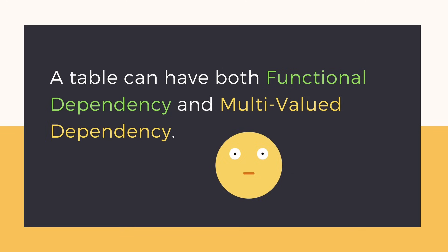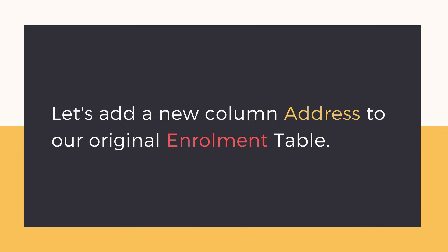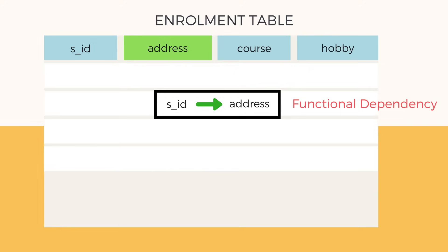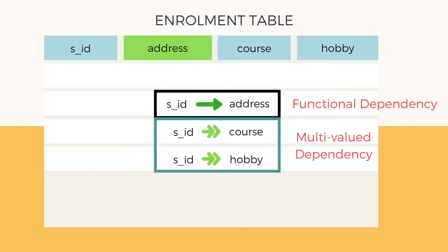In some cases a table can have functional dependency and multi-valued dependencies together. For example, if we add address to our table, it will look like: student ID, address, course, and hobby. Clearly, the address of the student will be functionally dependent on S ID, while we have multi-valued dependency between S ID and course, and S ID and hobby.